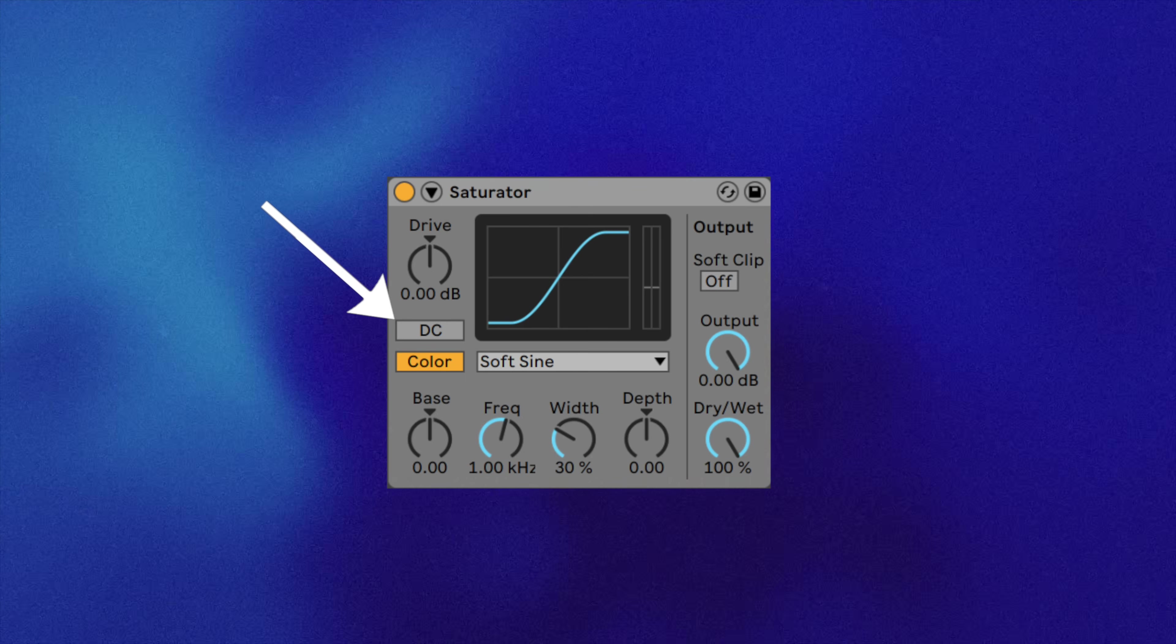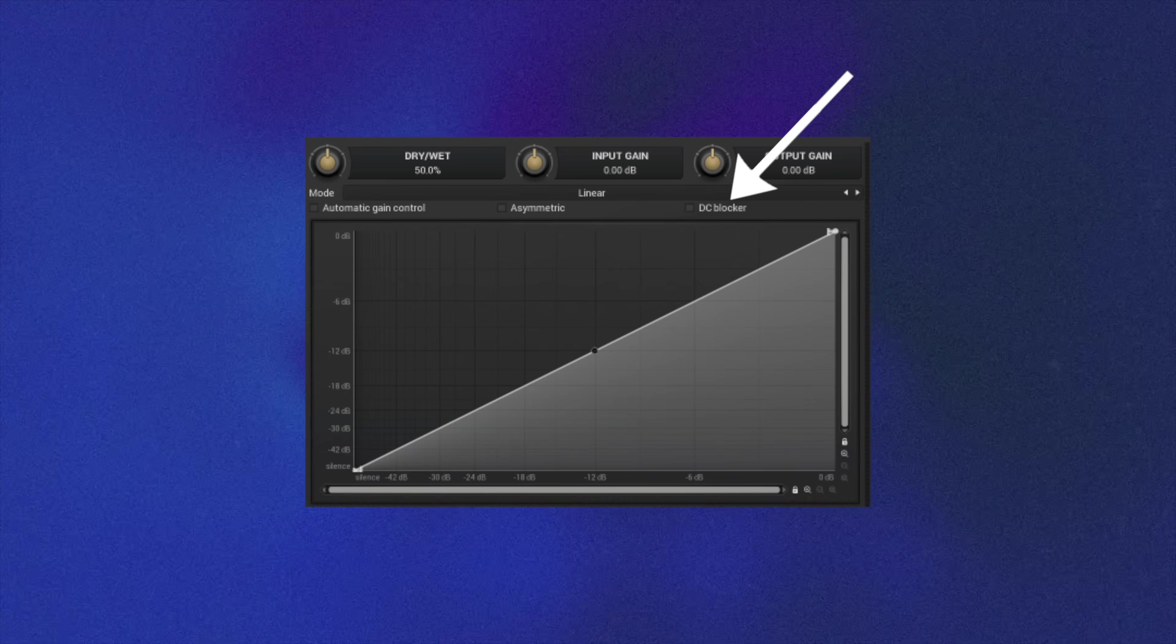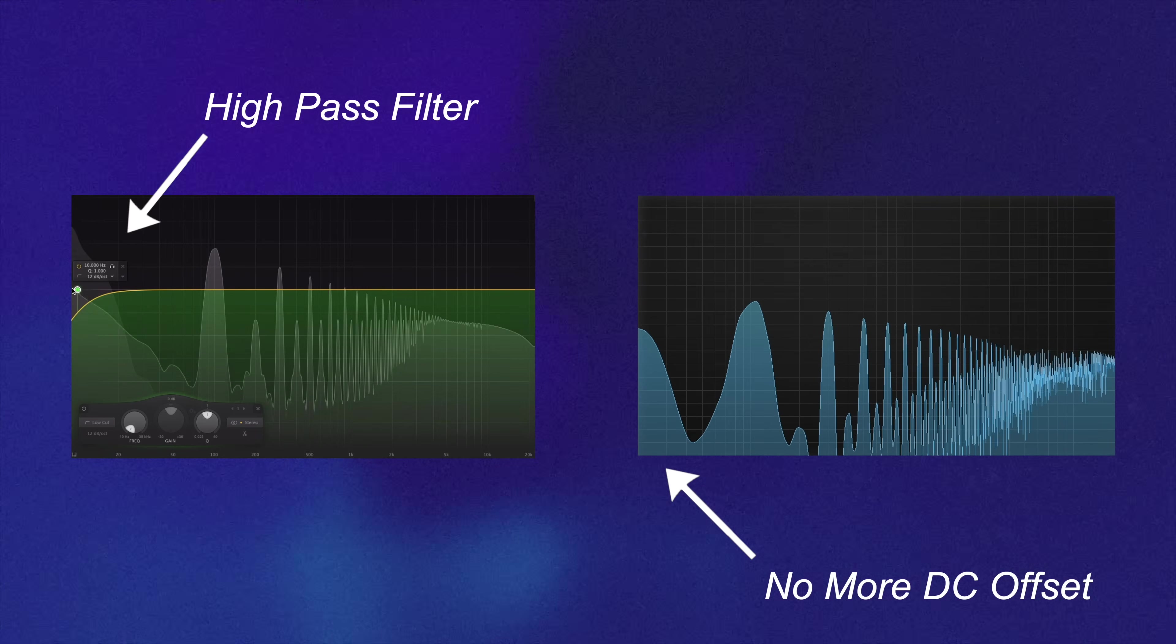This is why lots of distortion plugins have a DC filter, but if yours doesn't, it's wise to put a high-pass filter after.